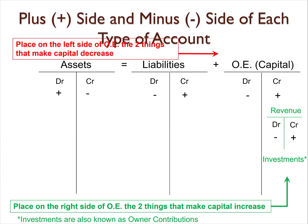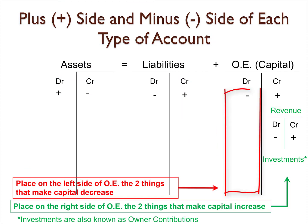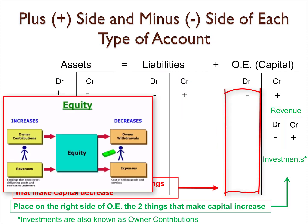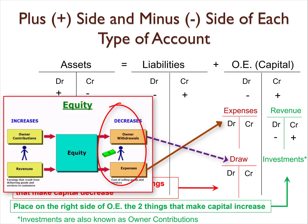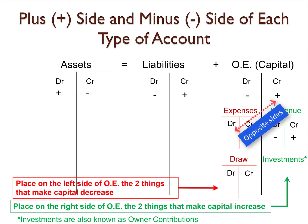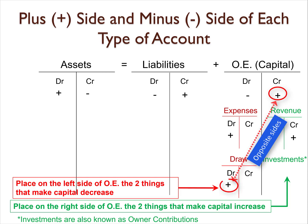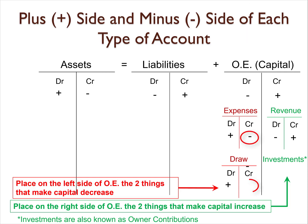Let's place on the left side of the capital the two things that make capital decrease — they are expenses and draws. Because expenses and draws decrease the capital account, their plus and minus sides are the opposite of the capital account. This means that since the capital account increases on the right side, the expense account increases on the opposite or left side. The same goes for the withdrawal account, also called the draw account. The expense account decreases on the right side, and the draw account also decreases on the right side.